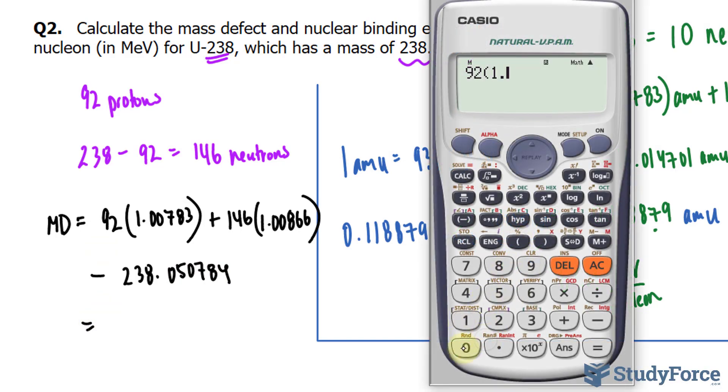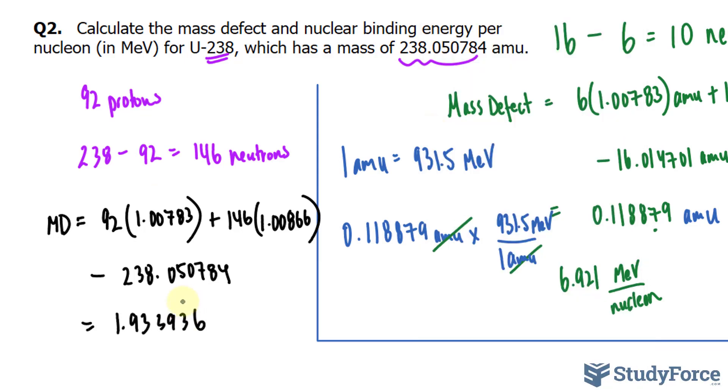92 times 1.00783 plus 146. I like to do it all in one step on my calculator. Minus 238.050784. And we should have a number that has a maximum of five digits after the decimal place, to keep in mind significant figures. So 1.93393. And I'll write the six down so I don't round too early. I'll put a dot over the three just to signify that that's where it should end. And that's AMU. So I found the mass defect.